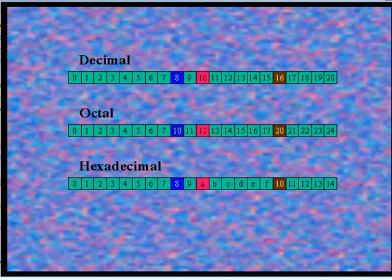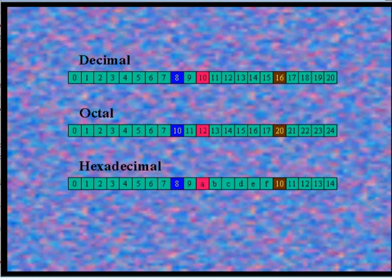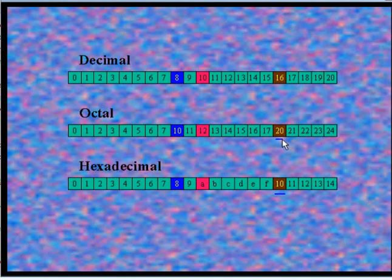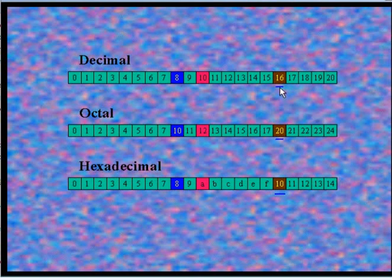In the third case, we assign hexadecimal number 10 to variable c, written as integer c equal to 0x10. The equivalent octal number displayed is 20 and the equivalent decimal number is 16. So hexadecimal 10 equals octal 20 and decimal 16.